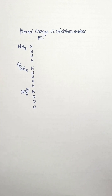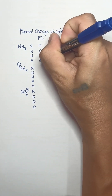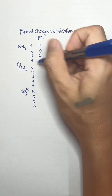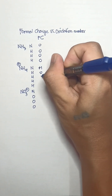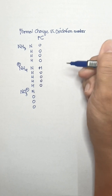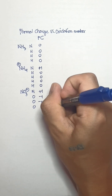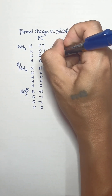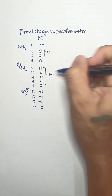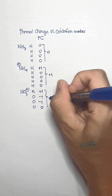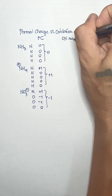For comparison, here are the formal charges calculated for each atom. For ammonia: 0 for nitrogen and 0 for each hydrogen. For ammonium ion: positive 1 for nitrogen and 0 for each hydrogen. For nitrate ion: positive 1 for nitrogen, negative 1 for two oxygen atoms, and 0 for one oxygen atom. Ammonia is neutral with a net charge of 0, ammonium ion has a net charge of positive 1, and nitrate ion has a net charge of negative 1.